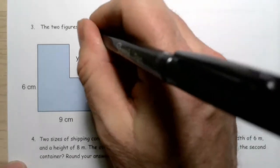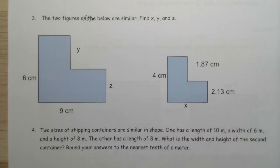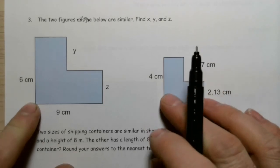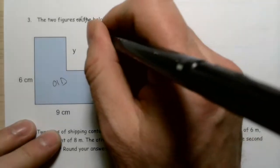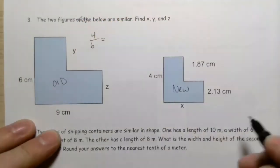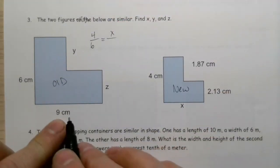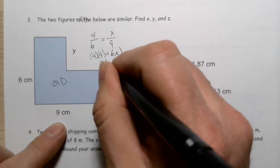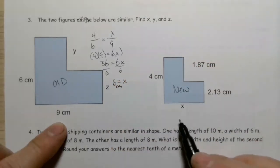Now we have two similar L-shapes and we need to find x, y, and z. The two corresponding sides are the vertical sides: 6 on the old and 4 on the new. Setting up the ratio 4 over 6, we want to find x, which is the base of the new corresponding to the base of the old. Cross multiplying: 4 times 9 equals 6 times x, so 36 equals 6x. Dividing both sides by 6 gives x equals 6 centimeters.